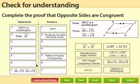So our proof is already set up. Let's take a look. ABCD is a parallelogram. That's given. Draw segment AC. Through any two points there exists exactly one line.